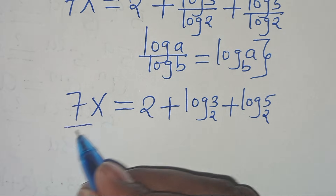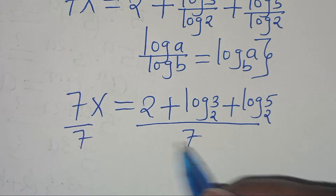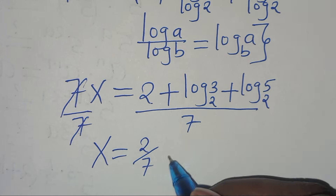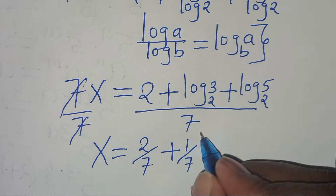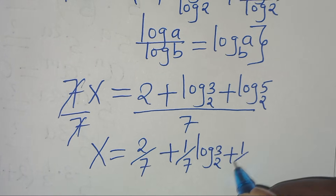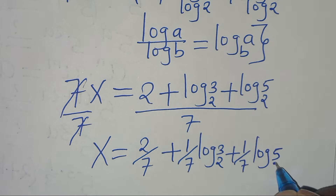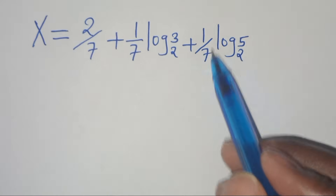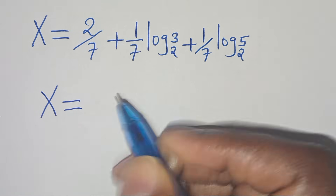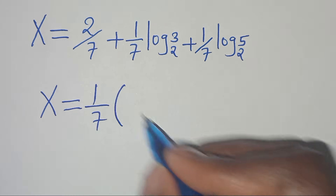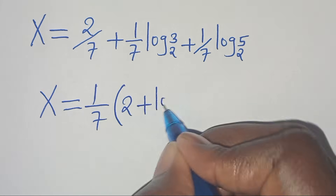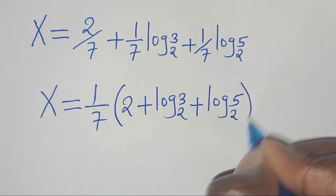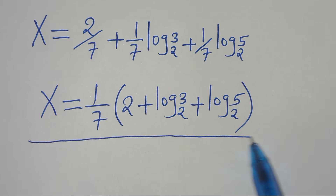The next step is to divide both sides by 7, so that now we have x equals 2 over 7, plus 1 over 7 times log 3 to base 2, plus 1 over 7 times log 5 to base 2. Since 1 over 7 is common, we can express x as 1 over 7 times the parentheses 2 plus log 3 to base 2 plus log 5 to base 2. So this is the value of x.